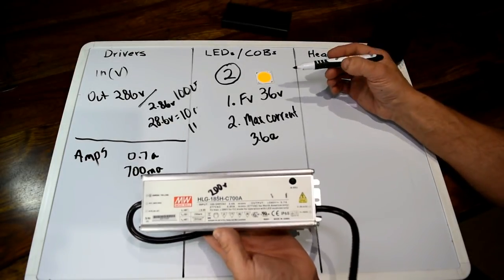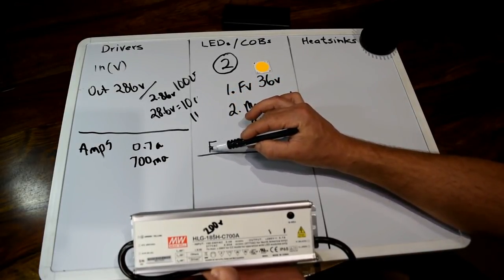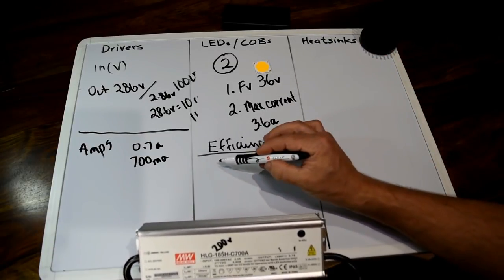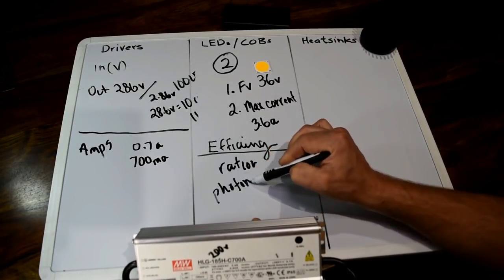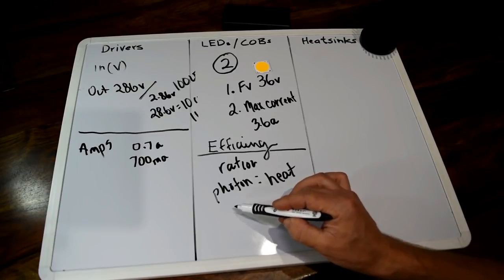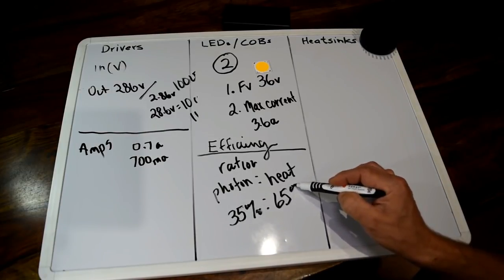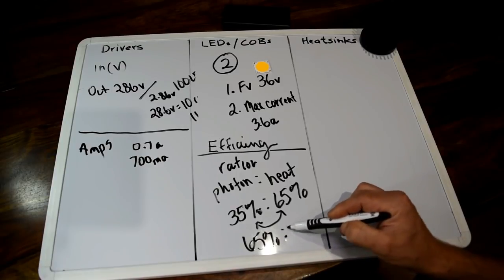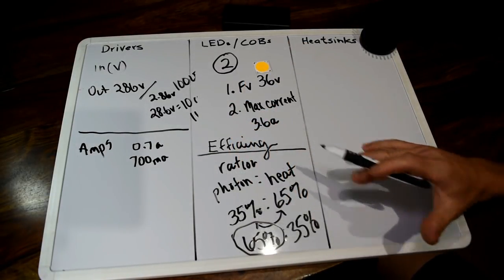With LEDs and drivers, the whole motivation or goal of doing this hobby and getting into this is efficiency. Efficiency is a ratio of photons of light energy to heat. In the past with HPS, we've had a ratio of 35% photons to 65% heat. But with LEDs, we can flip this around. We can get 65% photons to 35% heat. That's our yield. We're using the same amount of energy but yielding more photons, and that's the whole goal for this.